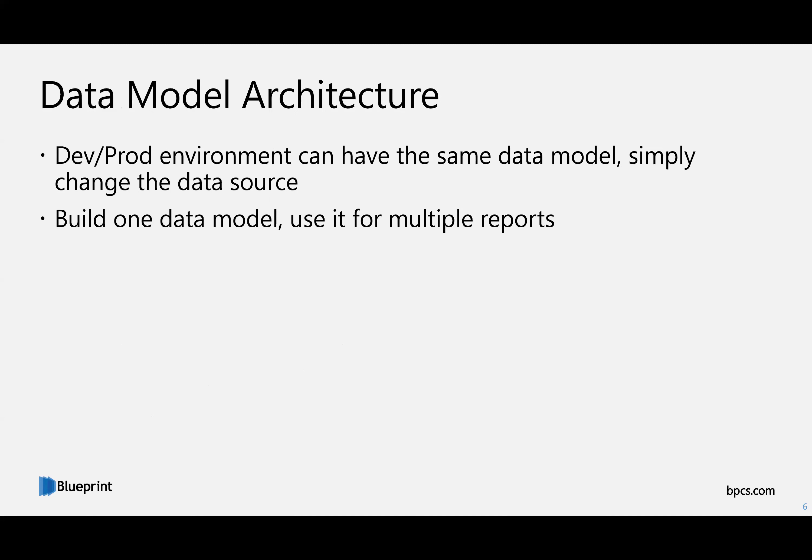Within the data model there's also an architecture. If you have a dev environment and a prod environment, or if you're migrating from on-prem to Azure, having the same structure — especially in the data warehouse — means you can use the same data model and just change the data source. You can have one template data model and flip out the data source when you're ready, then publish it in multiple locations, multiple apps — an app for dev and an app for prod.